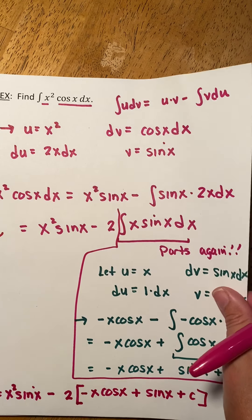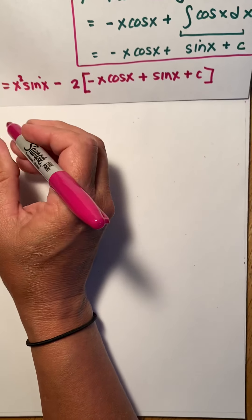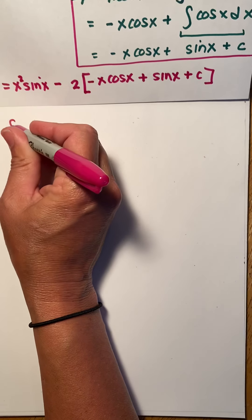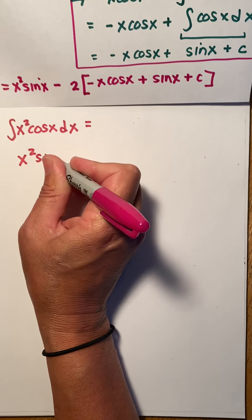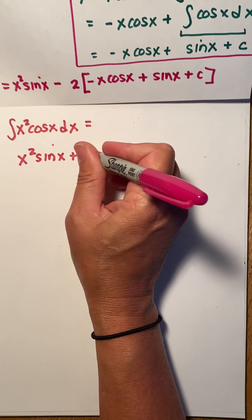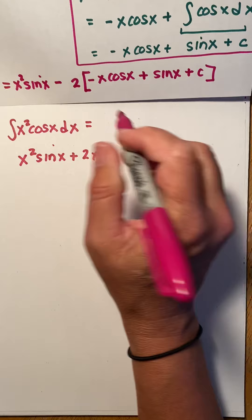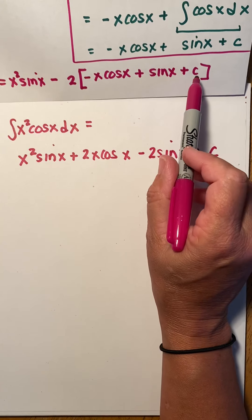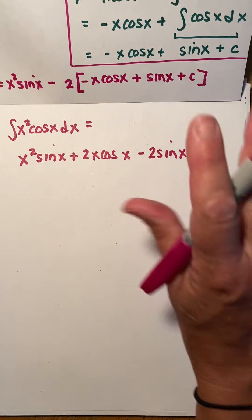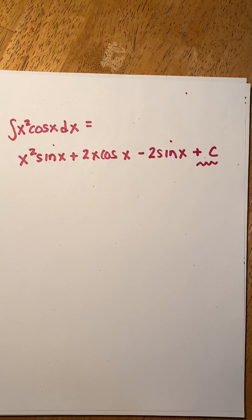Putting it all together and distributing the −2: the integral of x²·cos(x) dx equals x²·sin(x) + 2x·cos(x) − 2·sin(x) + C. Any constant times −2 is still an arbitrary constant, so we just write +C. Kind of fun — I think this is so cool!